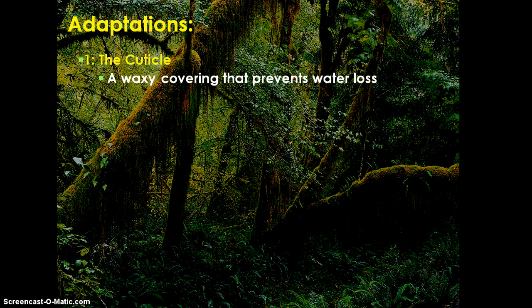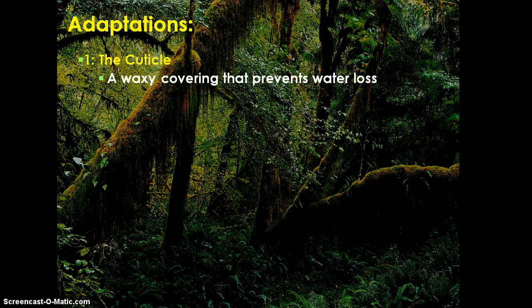There were a few adaptations we see both in the fossil record and in the different types of plants currently on Earth. The first is that some plants developed a cuticle — a waxy covering that prevents water loss. You'll see this cuticle on all land plants, or plants growing where there is very little water. Some swampy plants don't have a cuticle, but most do. It's a waxy covering on their leaves that prevents water from escaping.